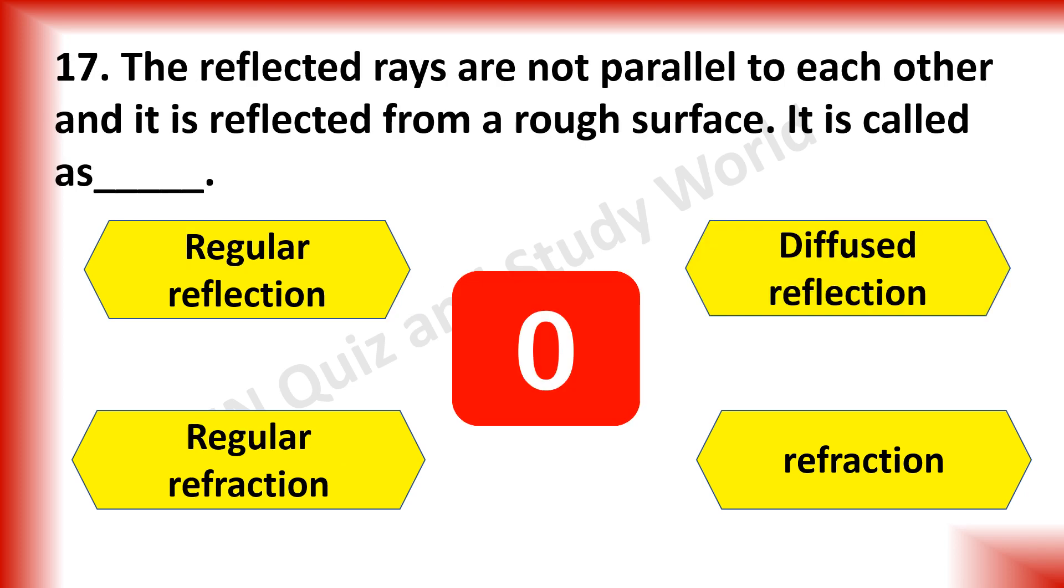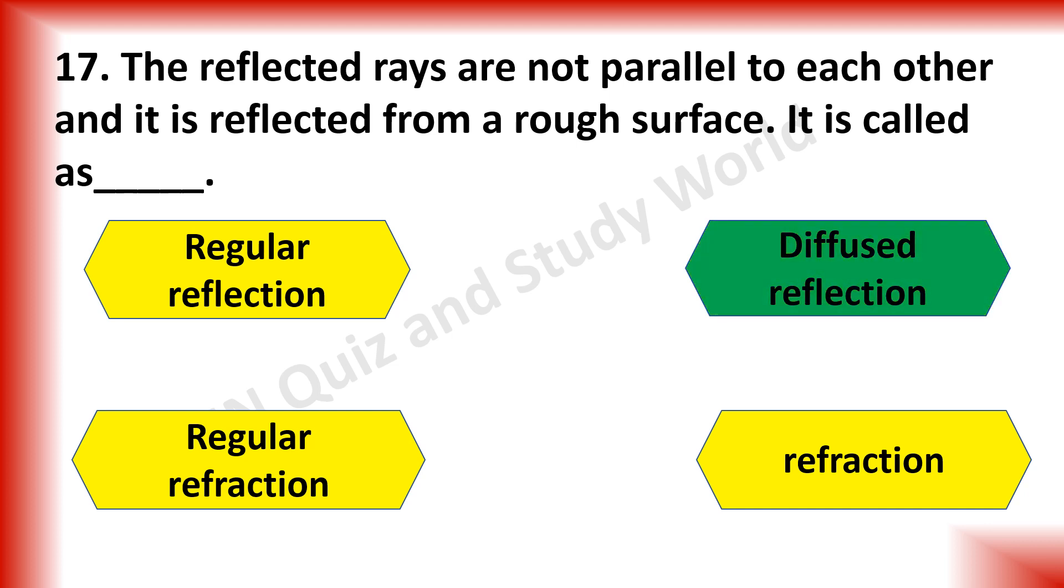What type of reflection takes place when the reflected rays are not parallel to each other and it is reflected from a rough surface? Is it regular reflection, diffused reflection, regular refraction or refraction? The answer is diffused reflection.